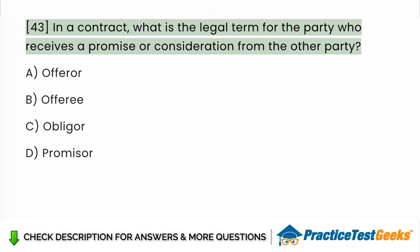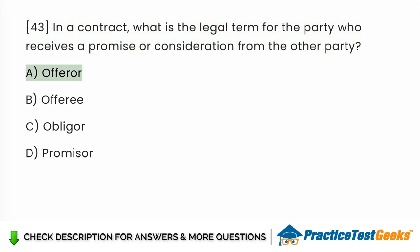In a contract, what is the legal term for the party who receives a promise or consideration from the other party? a. Offeror. b. Offeree. c. Obligor. d. Promisee. Answer: d. Promisee.